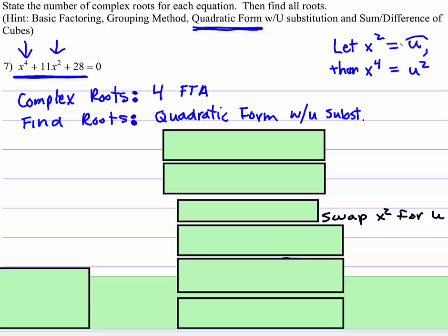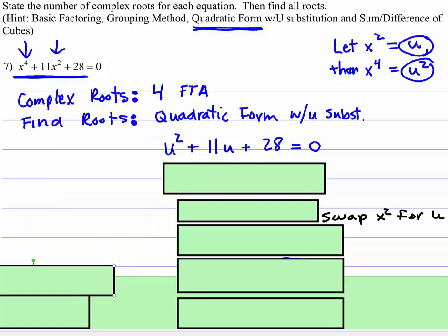Then we're going to use the u squared and the u, and we're going to plug it back into the original. So look at what we did. Where there's an x to the fourth, we now have u squared plus 11u instead of 11x squared plus 28.